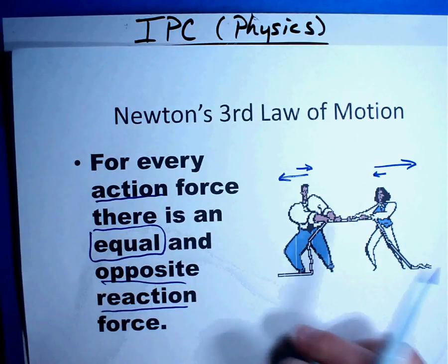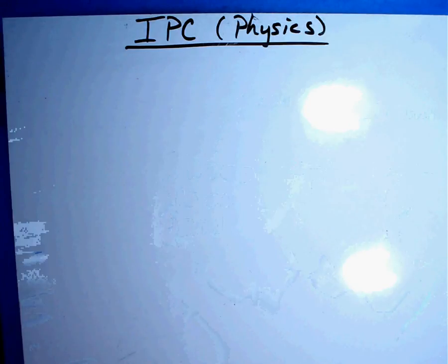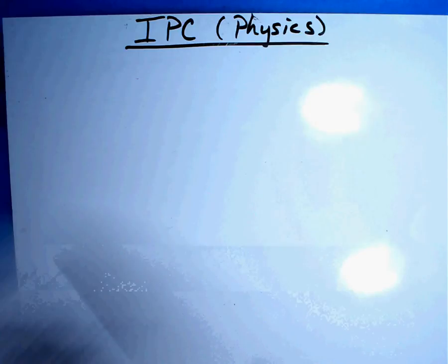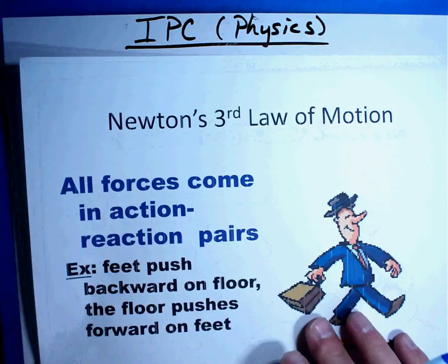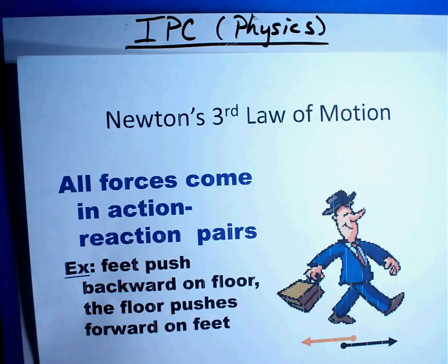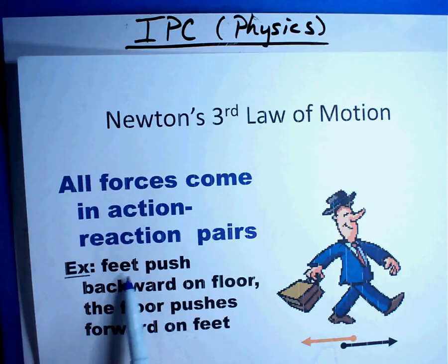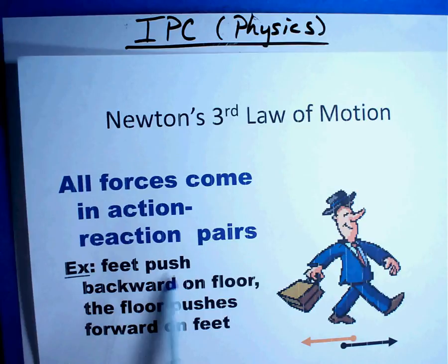Where does that lead us? Well, let's see. Newton's third law of motion. Here's a couple of things to jot down that might be helpful. Here's a great example. You may want to pause the video real quick and write that one down. All forces come in action-reaction pairs. Notice the guy walking down the sidewalk. His feet push backward on the floor, and the floor pushes forward on his feet. So to walk, you're pushing against the ground, and the ground is pushing against you. That is another great example of equal and opposite reaction. For one thing that's happening, there's something happening in another direction.